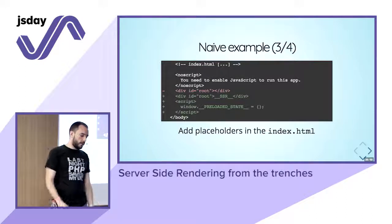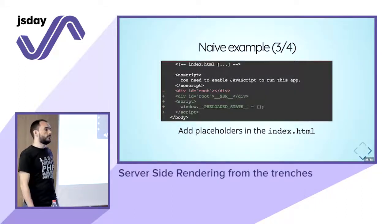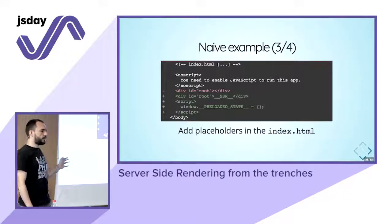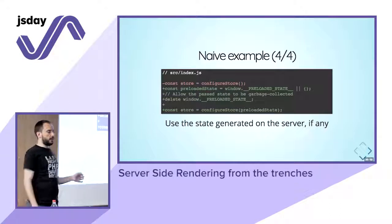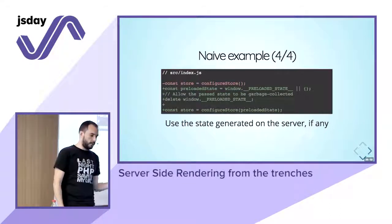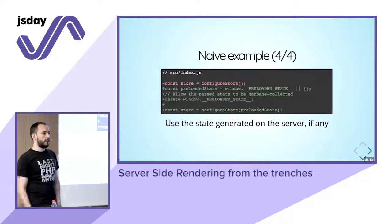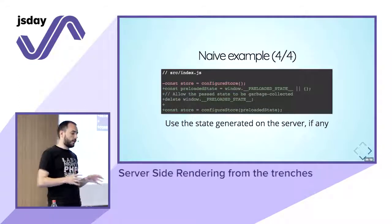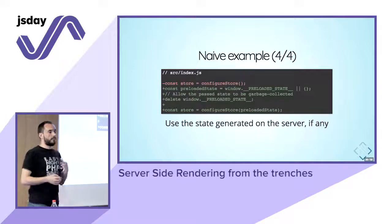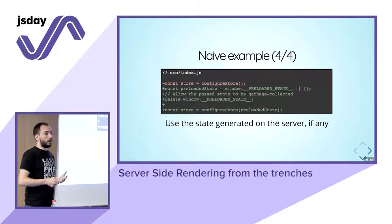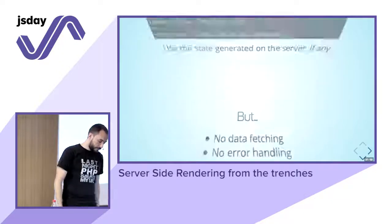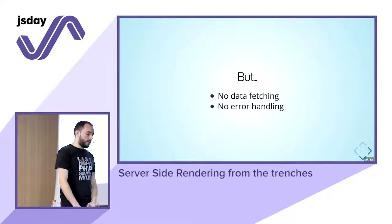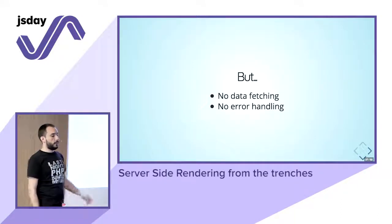For returning the HTML, you need to get the state that has been generated on the server and the HTML, and then replace placeholders in the index.html file to simulate what would happen in the browser. Once you have this HTML with all the data inside, you send this back to the client. You also have to make sure that the state you serialize on the server in the HTML response is used by the client-side application when it loads — otherwise the client-side application doesn't know what has been done by the server and tries to redo everything, which means you lose the benefit of pre-rendering on the server.